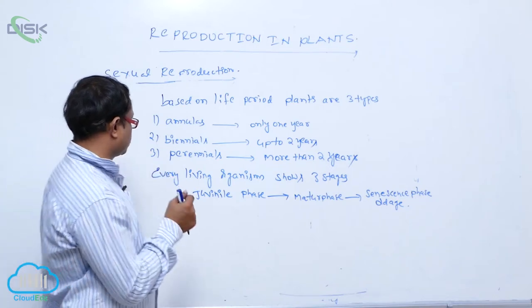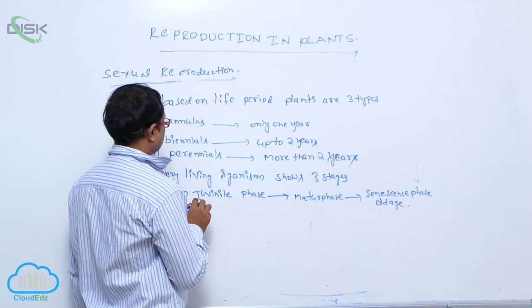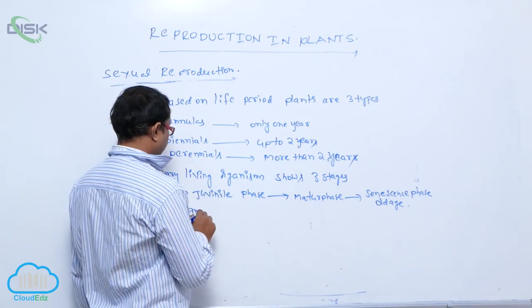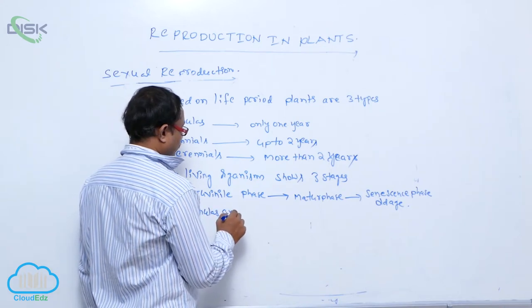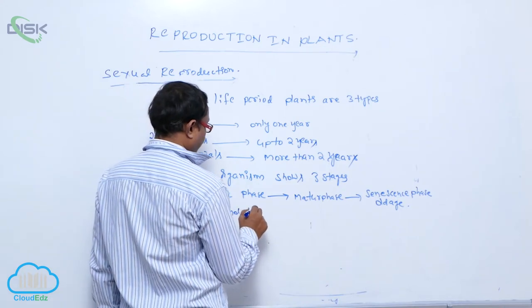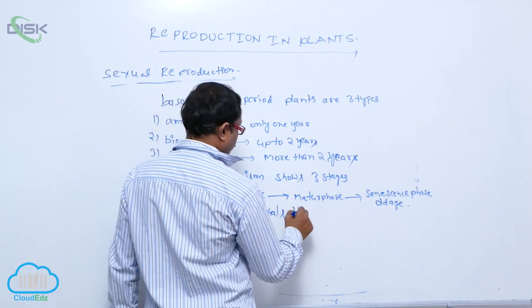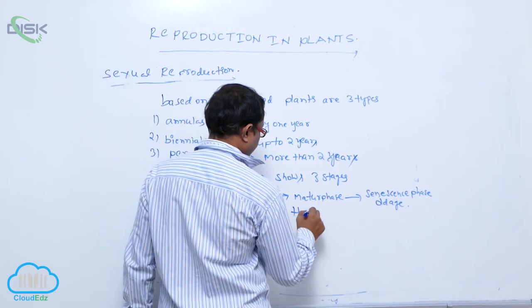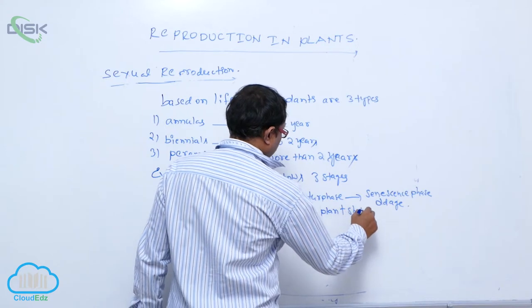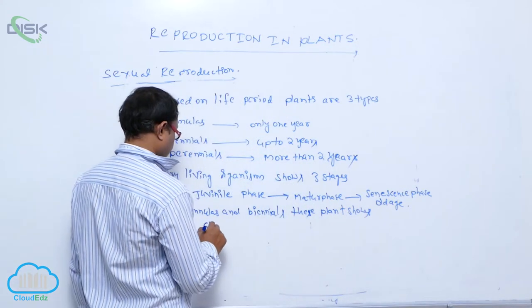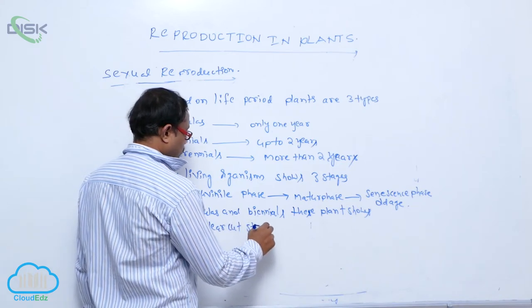In the juvenile phase, mature phase, and senescent phase, every living organism shows these. In annuals and biennials, these plants show clear-cut stages.